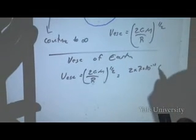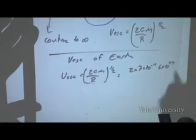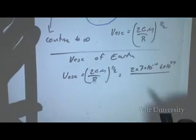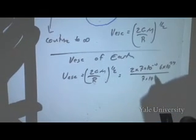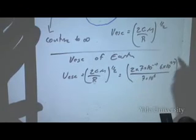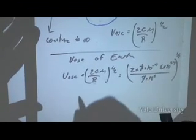2G is 7 times 10 to the minus 11. M for the Earth is 6 times 10 to the 24. R for the Earth is something like 7 times 10 to the 6. This all has to be taken to the one-half power. The sevens cancel.